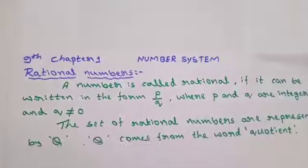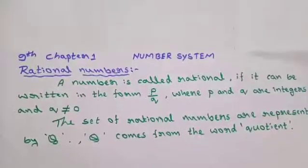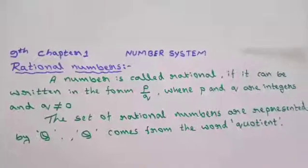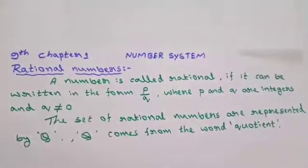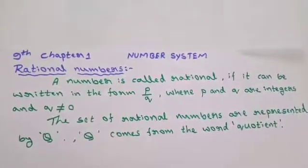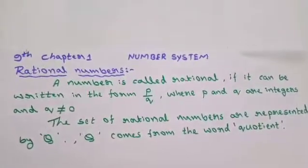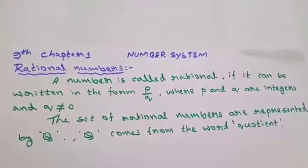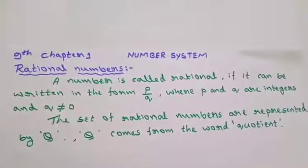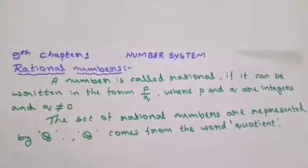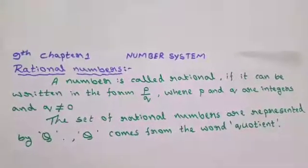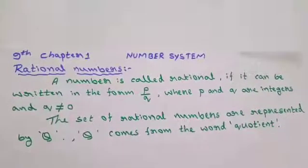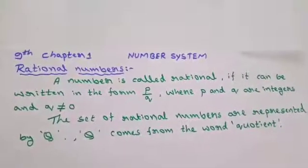Rational numbers are represented by Q. This notation Q comes from the word quotient.